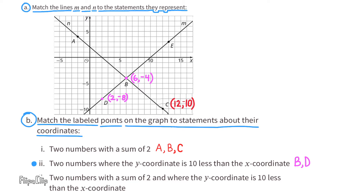There's another point on line M: point E. Point E's coordinates are 13 and 3. 3, the y-coordinate, is 10 less than 13, the x-coordinate.